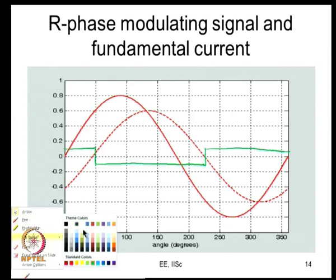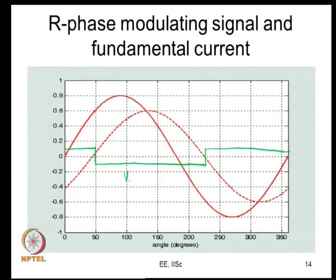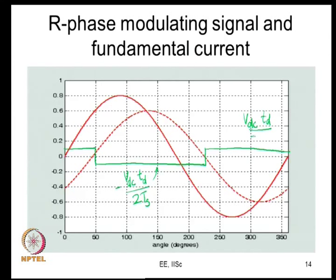The error voltage averaged over every carrier cycle: the error is Vdc in magnitude and it is seen for a duration Td in every carrier cycle of period 2Ts. So the averaged error voltage is ±Vdc × Td / (2Ts). Let us call this Verror - the average error voltage averaged over every carrier cycle.